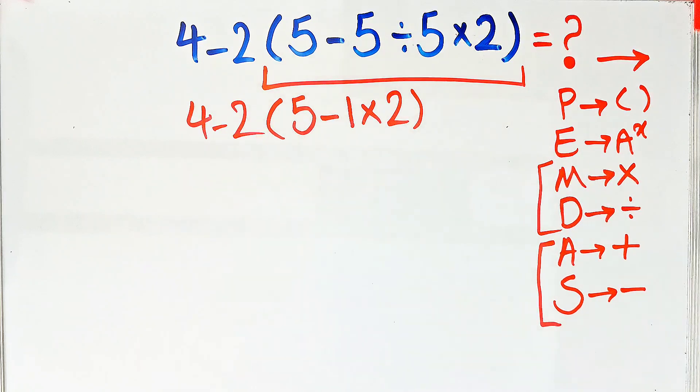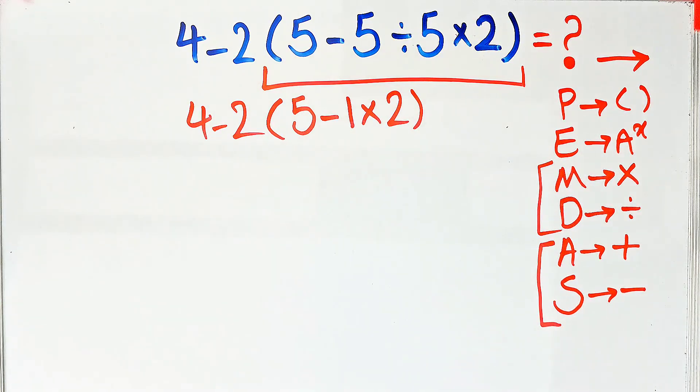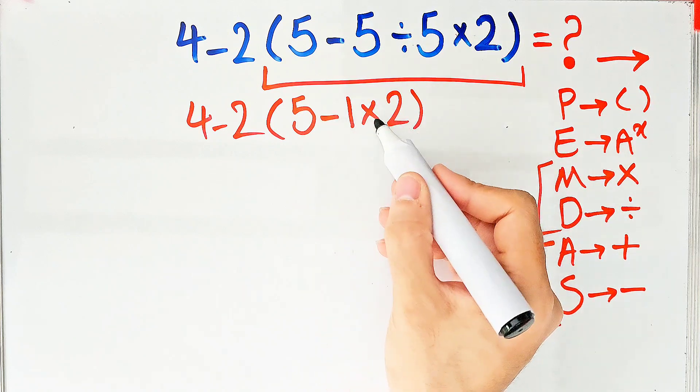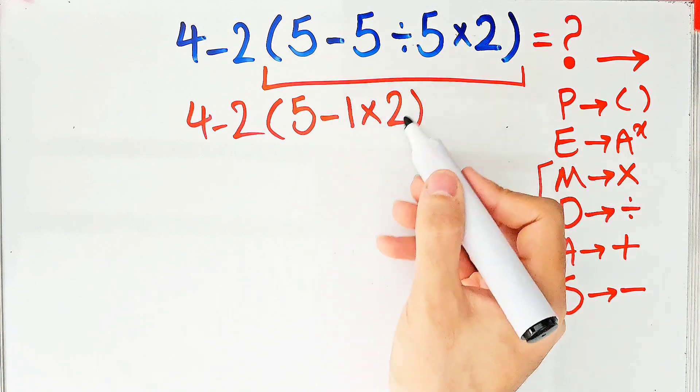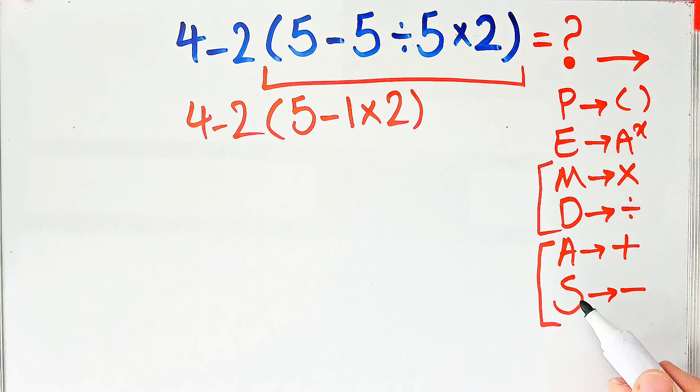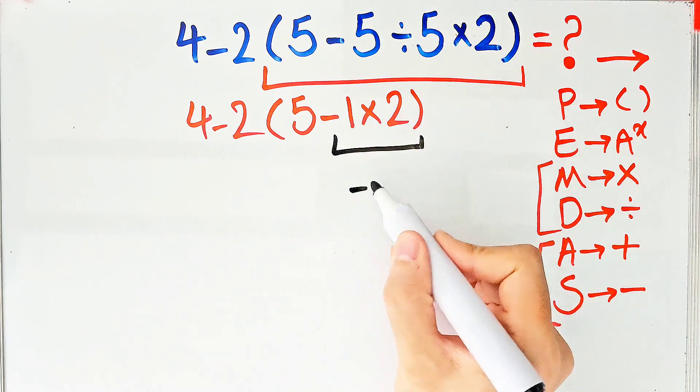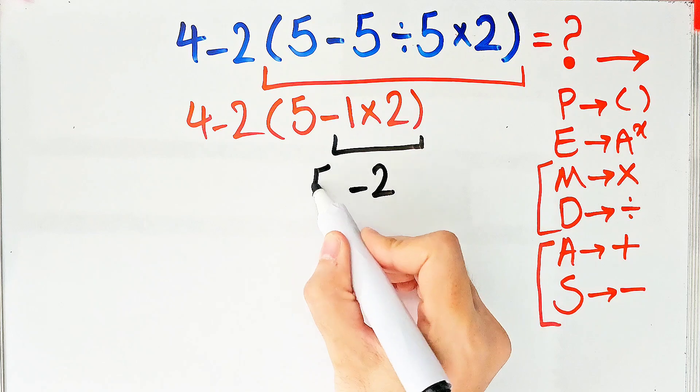In this step, again we simplify the parenthesis. Inside the parenthesis we have subtraction and multiplication. First we do this multiplication, because multiplication has higher priority than subtraction. 1 times 2 equals 2. We have 5 minus 2 inside the parenthesis.